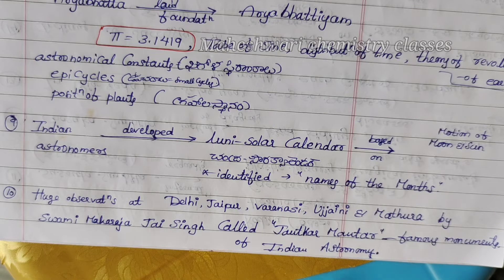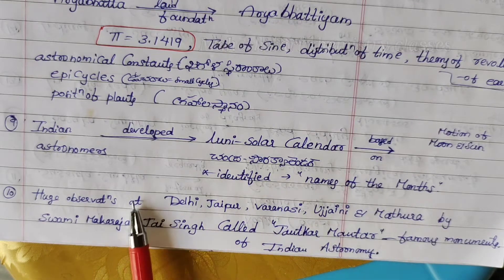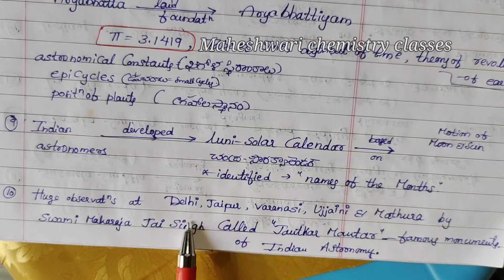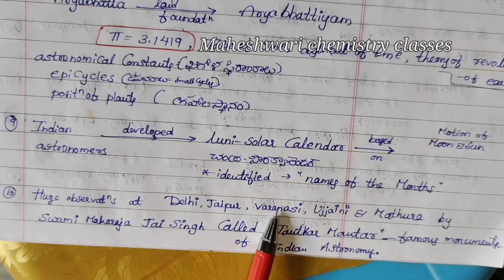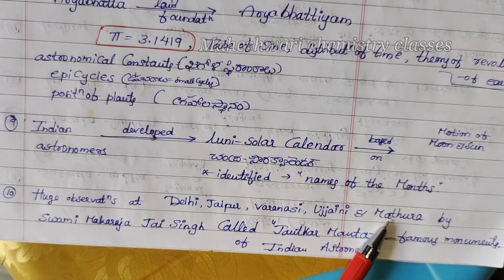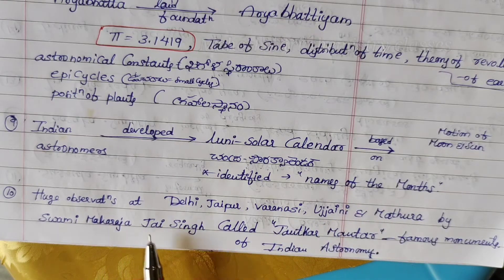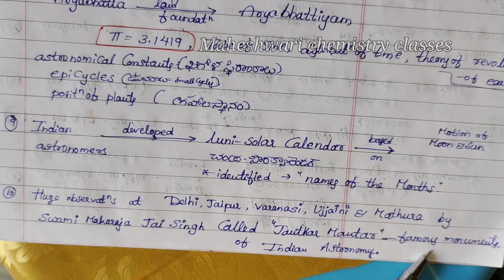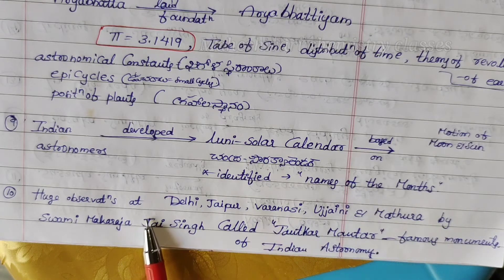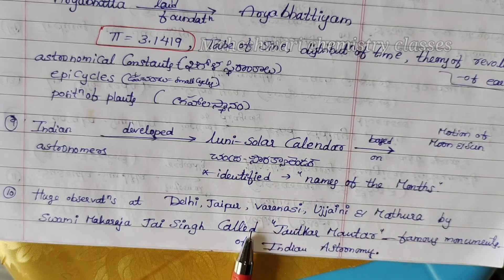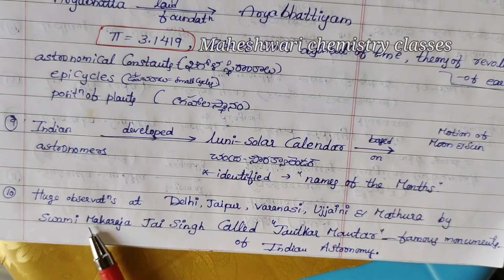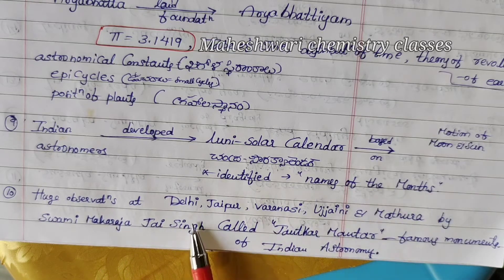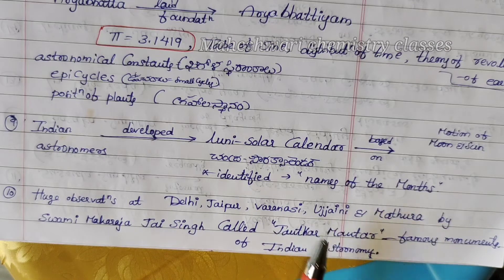The Jantar Mantar observatories are located in Delhi, Jaipur, Varanasi, Ujjayini, and Madura, built by Swami Maharaja Jaising. Jantar Mantar is one of the most famous monuments of Indian astronomy.